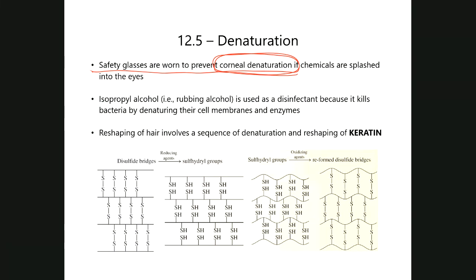Rubbing alcohol — isopropanol — acts as a disinfectant because it finds its way into the proteins that make up the cell membranes and enzymes of microorganisms. Once those proteins are destroyed by the presence of this substance, they can no longer function, and that ultimately kills these microorganisms.